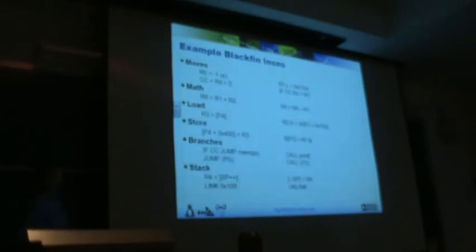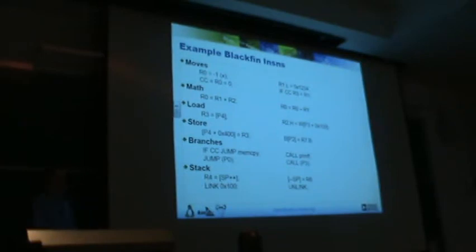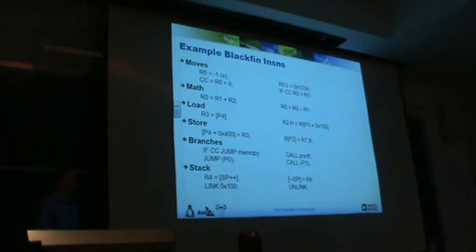Some example instructions: the first one basically just assigns the value negative one to the R0 register, or assigns a 16-bit value. You can do math, which is pretty easy to understand — add these two registers together and assign it to this register. Being a RISC architecture, we have only load and store; we don't have operations that go through memory indirectly. To load, you specify a register, the width to load, and some offset, and store it in a data register. To store, it's basically the opposite.